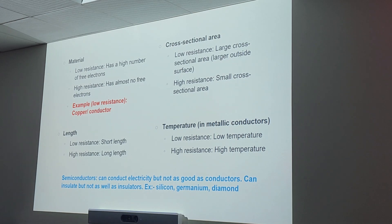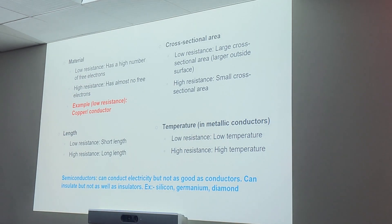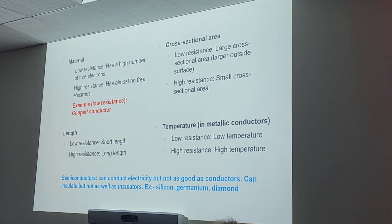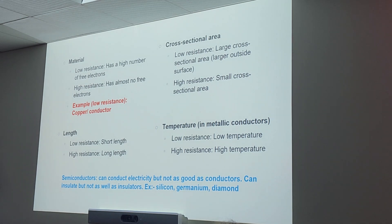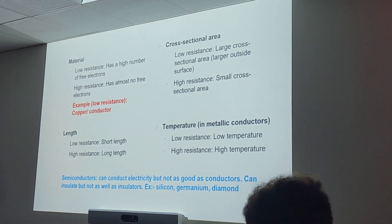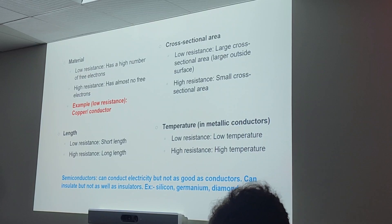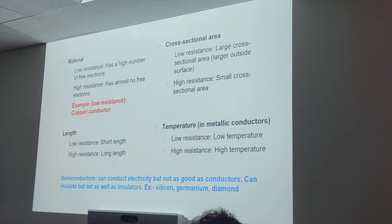Some things you need to remember about conductors and insulators: depending on the material, something will have low resistance if it has a high number of free electrons — that's what makes it a good conductor. It has low resistance because it allows for more flow of electrons. And if something has almost no free electrons, which is an insulator, that's going to cause high resistance within a circuit.